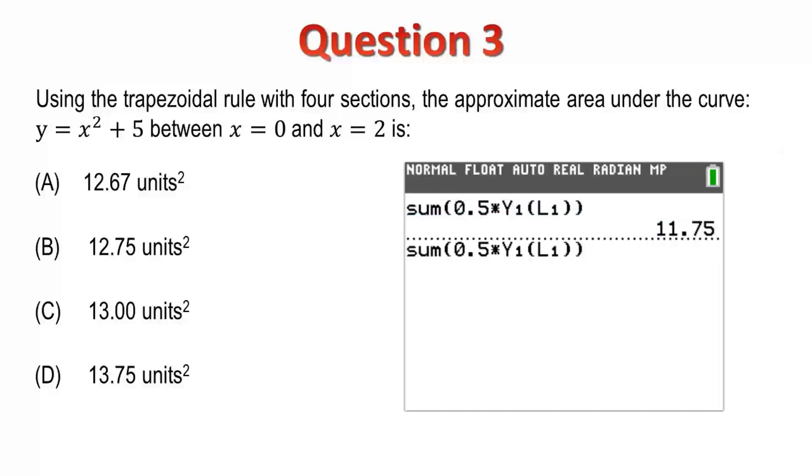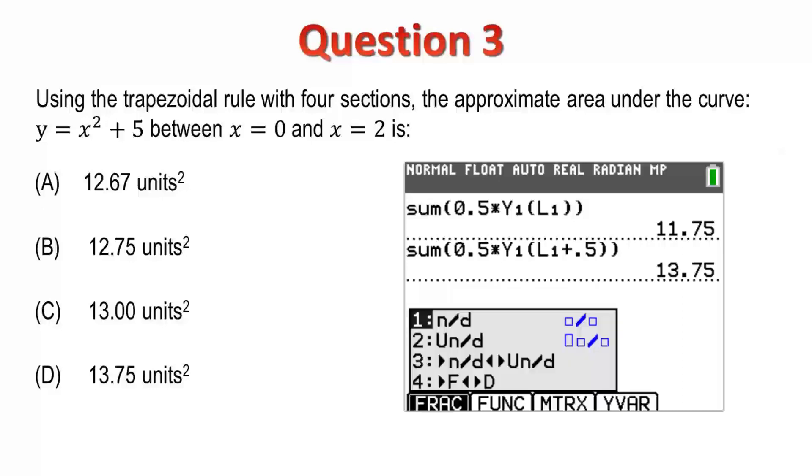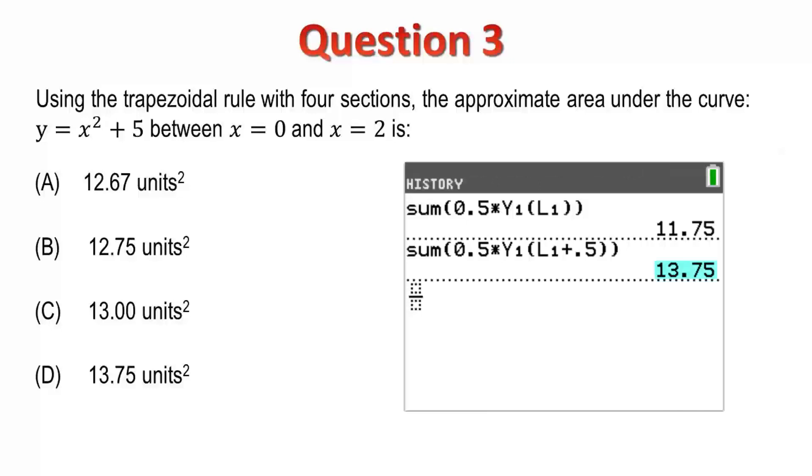I can now adjust list 1 by 0.5, and therefore calculate the heights of the right-bound rectangles. The trapezoidal rule is just the average of these two. So, I'll sum up 11.75 and 13.75 divided by 2 to get an answer of 12.75, which is option B.